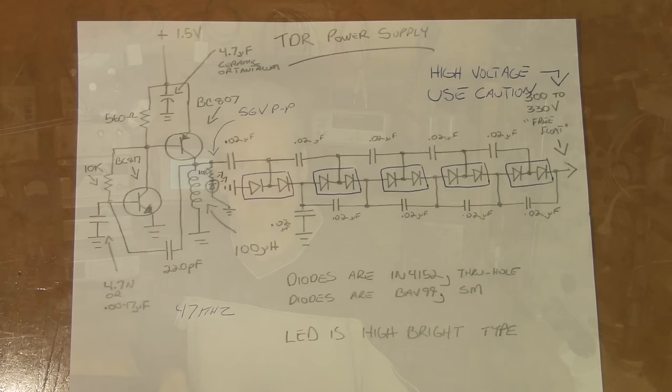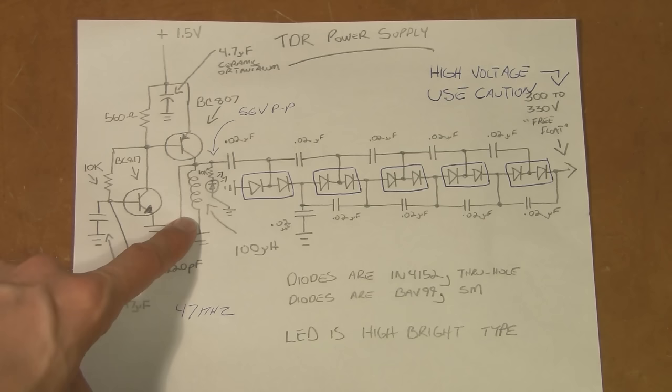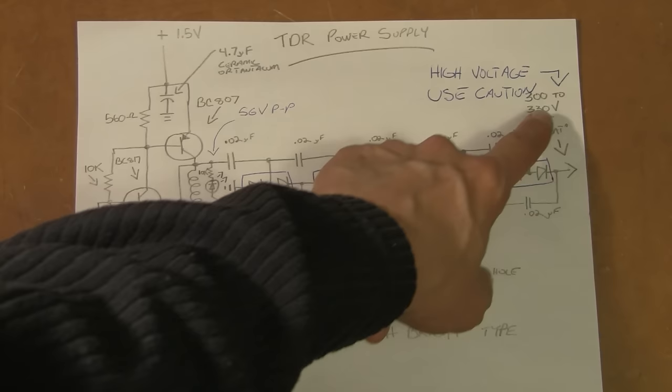Here's the TDR power supply. It runs off of a 1.5-volt C-cell battery, which oscillates these two transistors with this coil here, and runs through a multiplication stack, and we get about 330 volts free-floating out of that end of the stack. So if you build this, you want to exercise caution, because it can zap you. Of course, you're building this at your own risk, so just take care.